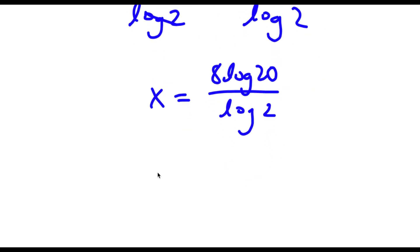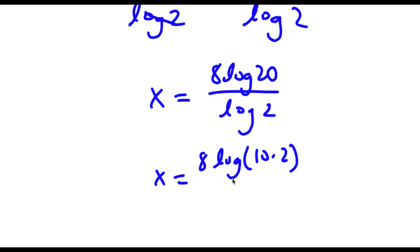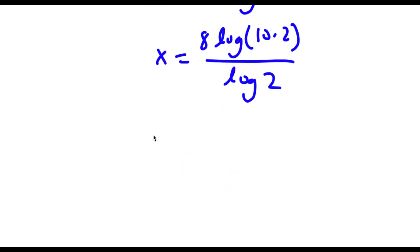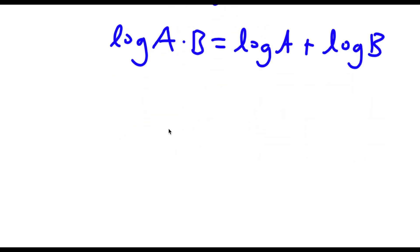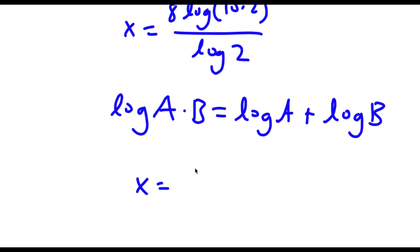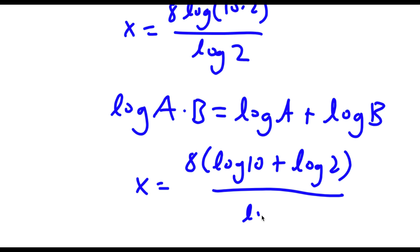Now 20 we can rewrite as 10 times 2, so I have log(10 times 2) over log 2. And if I have something in the form log(a times b), this is equal to log a plus log b. So log(10 times 2) equals log 10 plus log 2, and I have this over log 2.